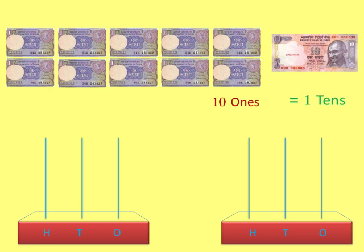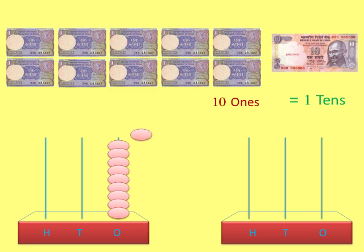Let's count on an abacus. Remember, each stick of the abacus contains only 9 beads. It is 1, 2, 3, 4, 5, 6, 7, 8, 9. We cannot put a 10th bead in one stick. So, put 1 bead in the tens stick instead of putting 10 beads in the ones stick. We do this by removing all beads from the ones stick.